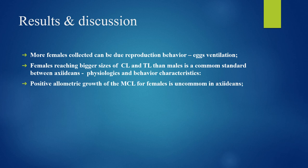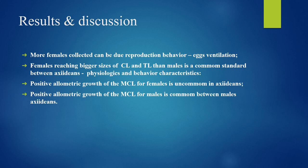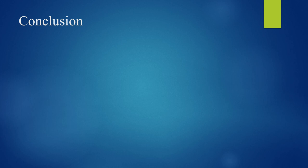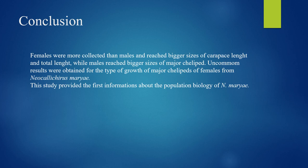Positive allometric growth of the major cheliped length for females is uncommon in axiideans. Females were more collected than males and reached a bigger size of carapace length and total length, while males reached a bigger size of major cheliped length. Uncommon results were obtained for the major cheliped length of females from Neocalichirus marii.